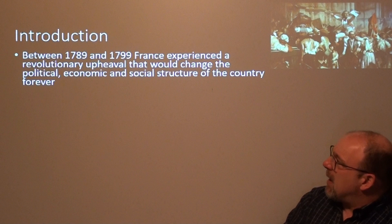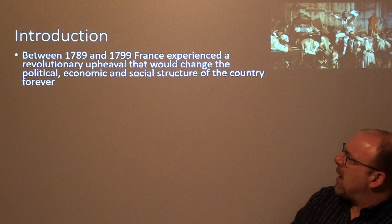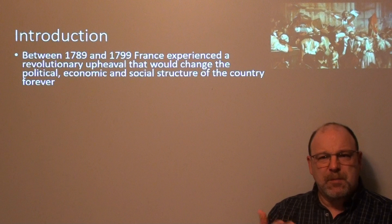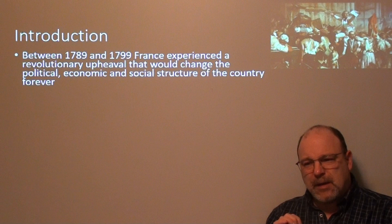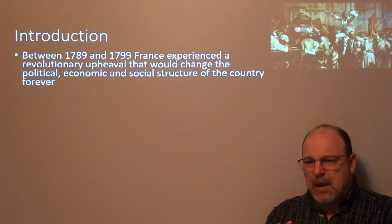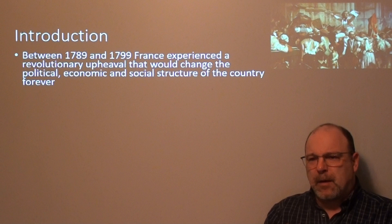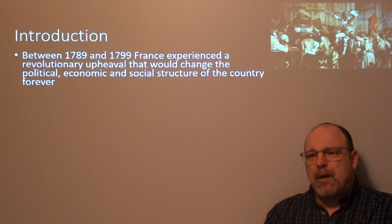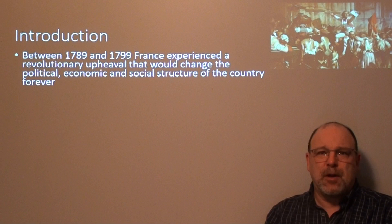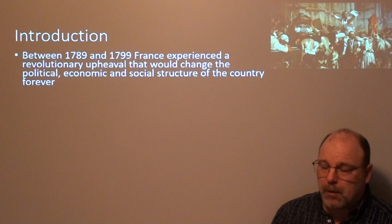Between 1789 and 1799, France experienced a revolutionary upheaval that would change the political, economic, and social structure of the country forever. This was a complete reset and rebuild. The French absolutist government before 1789 — its economic system, diplomatic system, all those things — were already not working. France was bankrupt. There was resistance from the nobility to pay taxes. When that revolution happens, it has to be a complete change from what they had toward something entirely new.